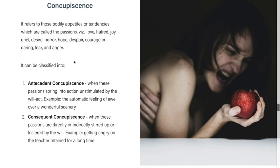Antecedent concupiscence is present when passions spring into action unstimulated by the will — they emerge before the will makes a consent. For example, the automatic feeling of awe over a wonderful scenery: when you go to a very beautiful place and you stand in awe, that feeling of awe is antecedent concupiscence — it comes before the consent of the will.